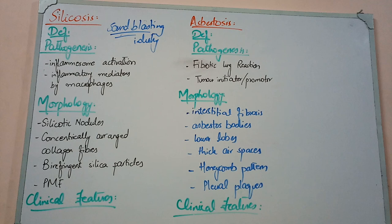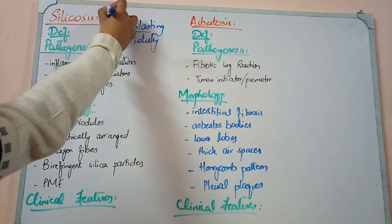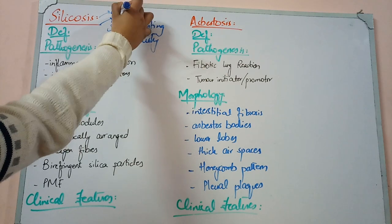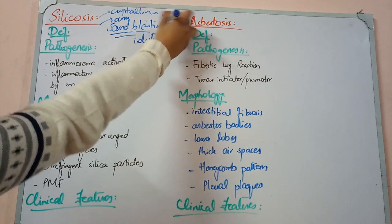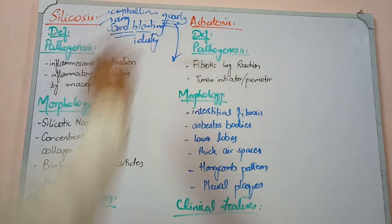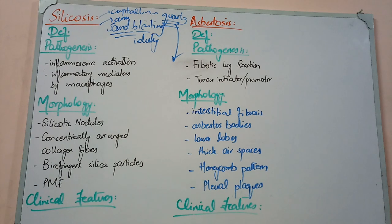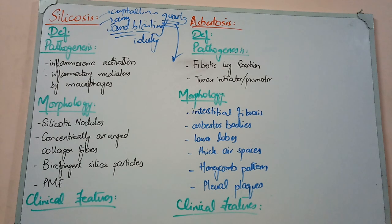Silica has two forms: a crystalline form and an amorphous form. In crystalline form, it is called quartz, which is the most damaging. Quartz in its pure form is very damaging, but if it is mixed with other materials, it reduces the damage. In pure form, it is limited to certain industries; in mixed form it is more widespread.